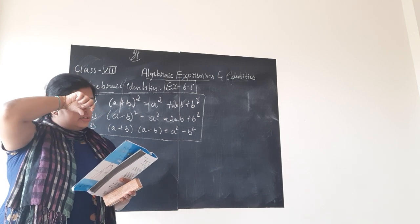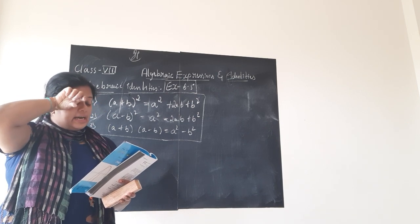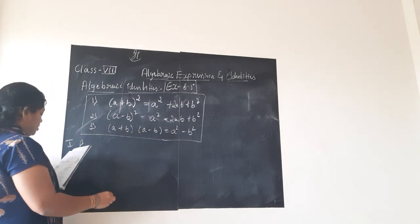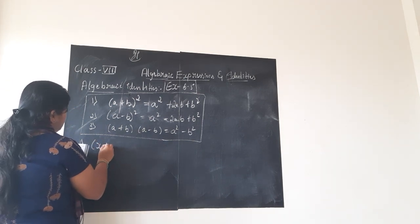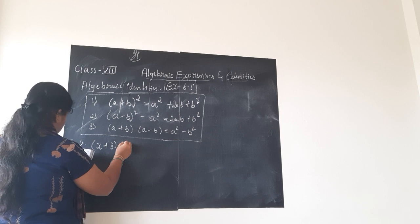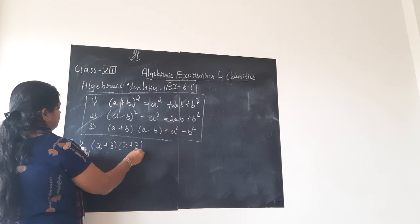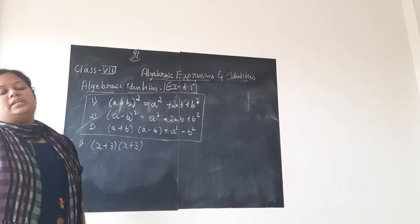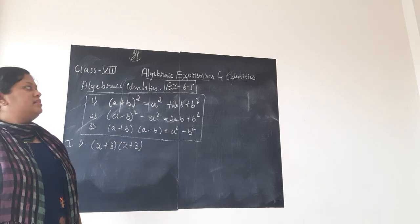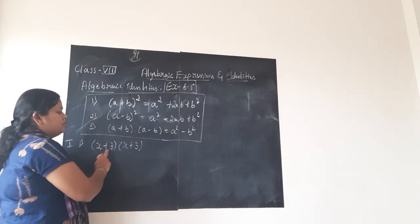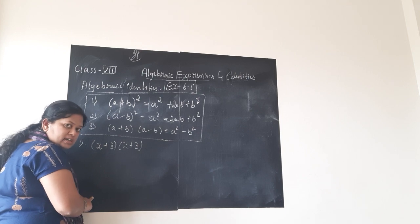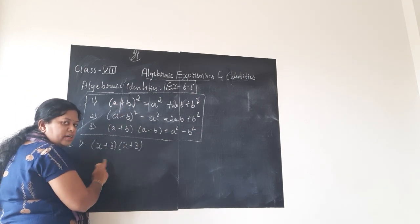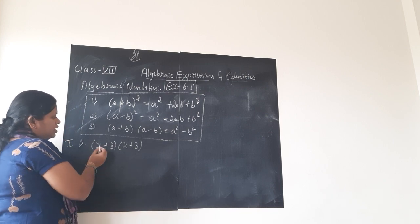First main: use a suitable identity to get each of the following products. The first question is x plus 3 into x plus 3. They are asking us to simplify all the given questions using whichever identity is suitable, and accordingly you need to substitute.